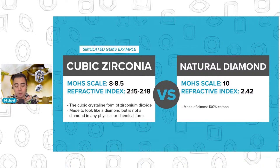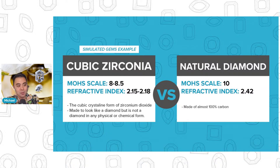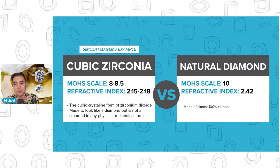A diamond, whether it's natural or not, is a 10 out of 10 — the hardest gemstone on Earth. The refractive index is 2.15 to 2.18 for cubic zirconia, versus a natural diamond which has a refractive index of 2.42. All that basically means is how much brilliant sparkle does it have when sunlight shines right through it — that is the refractive index of a gemstone.